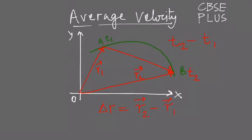We are using the triangle law of addition of vectors to find this R2 minus R1, which gives the delta R, which itself is a vector.